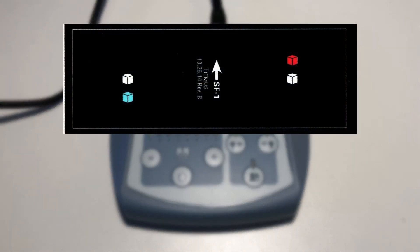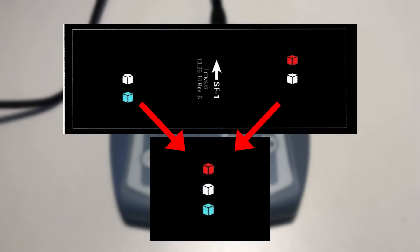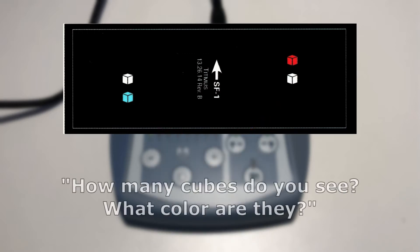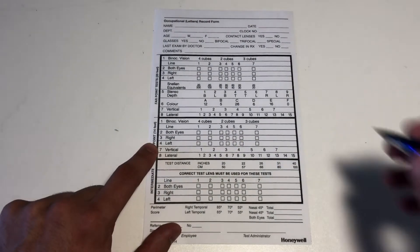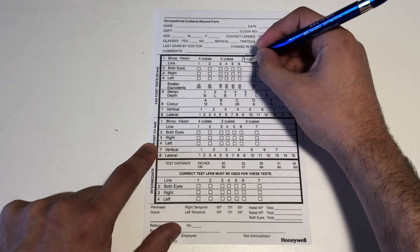The first slide is testing the patient's binocular vision. When their eyes adjust, the patient should see a combined image that looks like this. Ask the patient, how many cubes do you see and what color are they? In order to pass, the patient should see three cubes: a red one on top, a white one in the middle, and a blue one on the bottom. Record the results by circling the number of cubes seen by the patient.